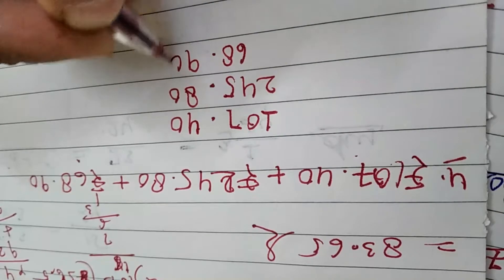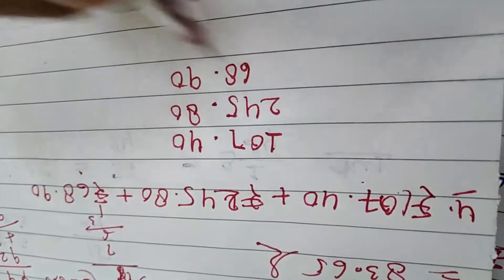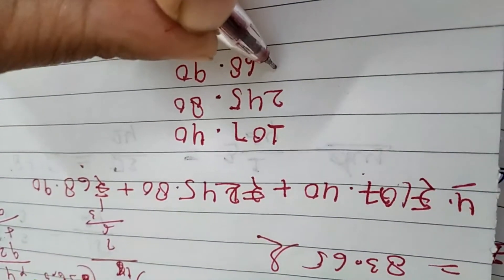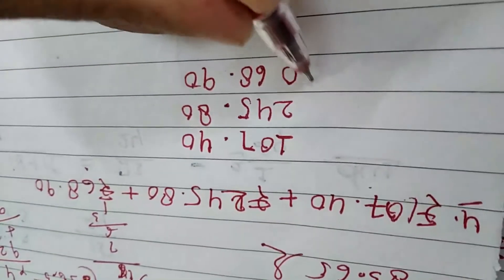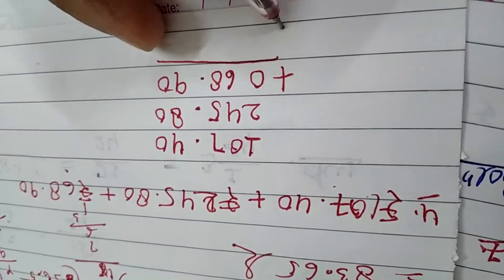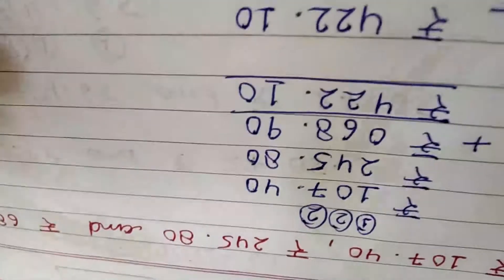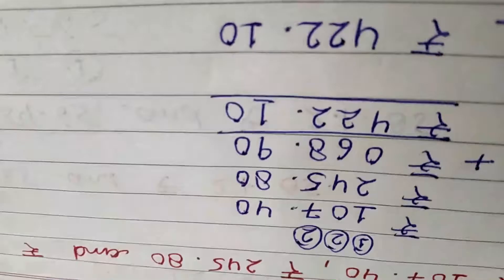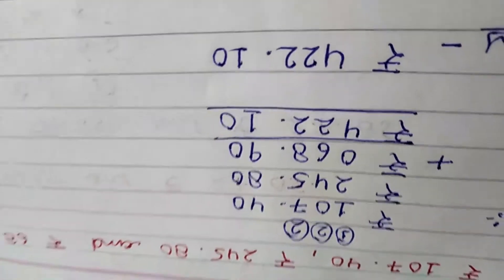We align the columns properly. If there is no digit in a place, we fill it with zero. Then we add all three numbers together. The answer will come out after doing the column addition step by step.